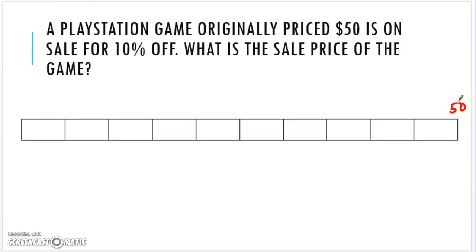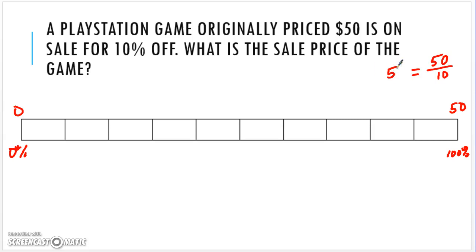The original price is $50, so 0% is zero dollars. It's on sale for 10% off — what is the sale price? Remember, 100% is $50 and 0% is zero. First, figure out how much each section represents: $50 divided by 10 sections equals $5 per section. So the sections are: $5, $10, $15, $20, $25, $30, $35, $40, $45, $50.